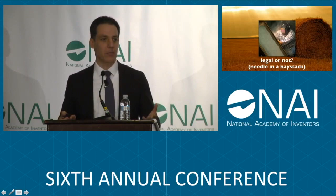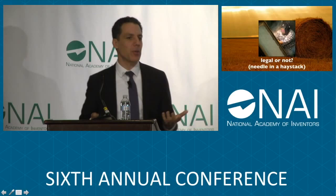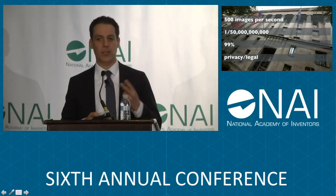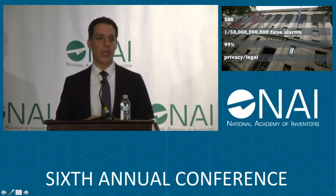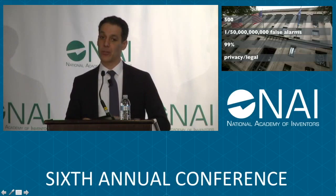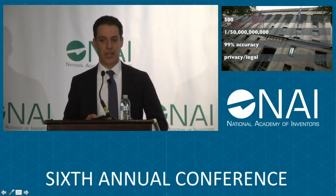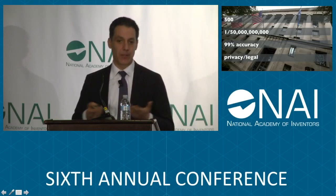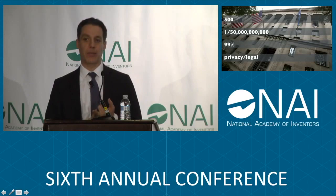This was 2008, and it was the proverbial needle-in-a-haystack problem. Facebook was dealing with half a billion uploads a day — today that number is upwards of a billion. The engineering demands were severe: we had to process 500 images per second with only two milliseconds per image, maintain a false alarm rate on the order of one in 50 billion — because you can't misclassify non-child pornography as child pornography — while achieving 99% detection accuracy, and throughout all of this we had to respect user privacy and be very careful given the legal standing around how child pornography is managed.